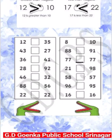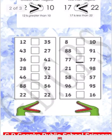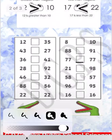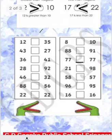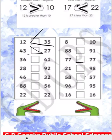Now let's begin with some numbers. We have number 12 and number 35 — the alligator will open its mouth from number 35. We have number 43 and 27 — the alligator will open its mouth from number 43 because 43 is greater. We have numbers 36, 28, and 92 — the alligator will open its mouth from 92.